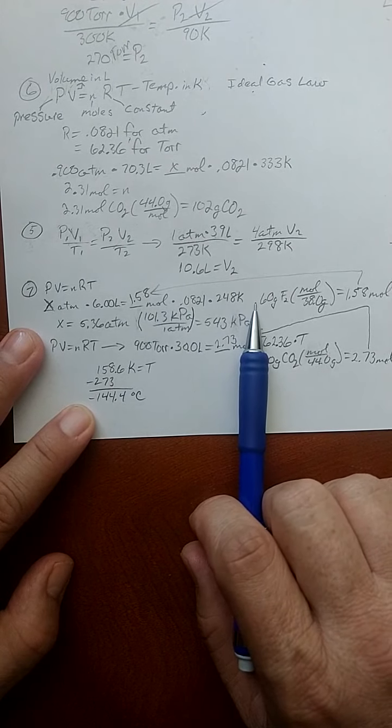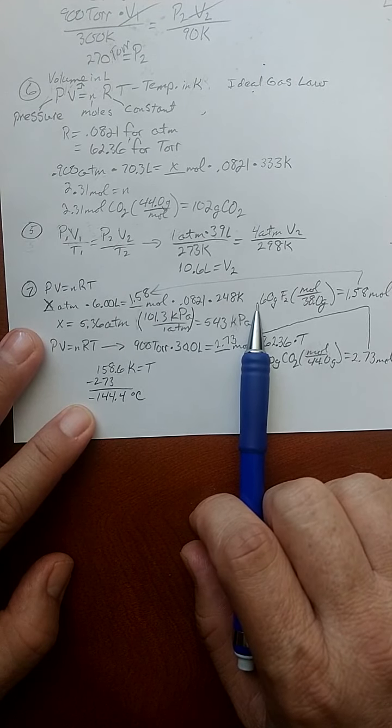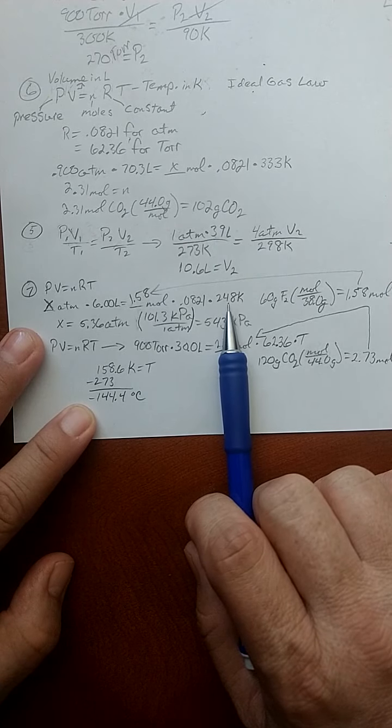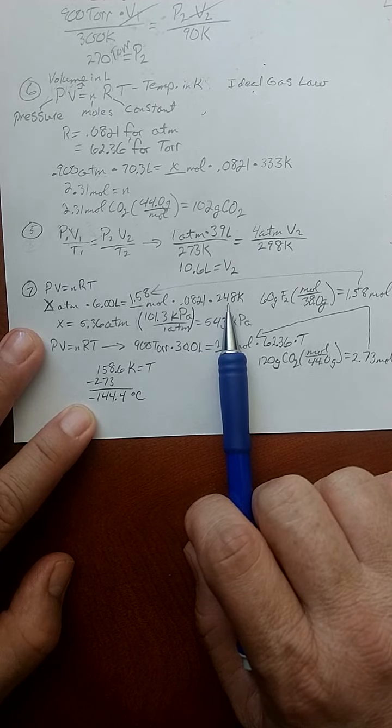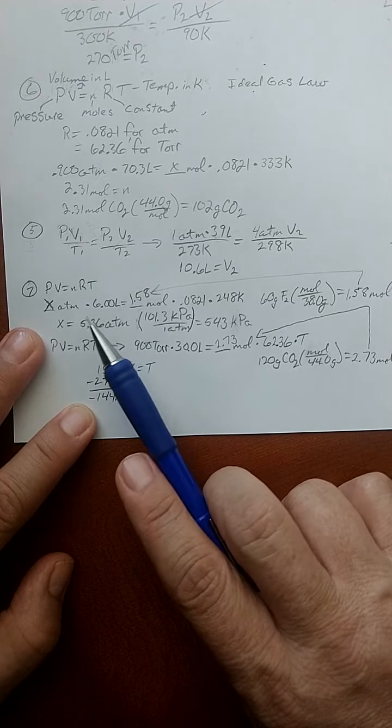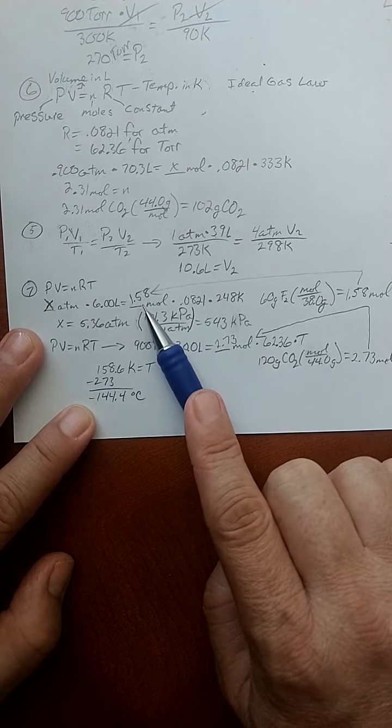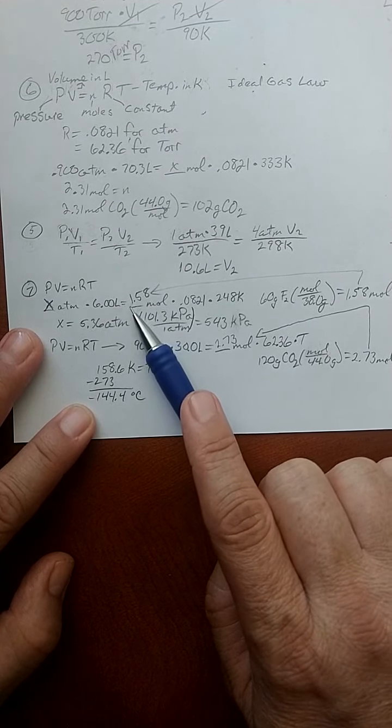I added 273 to my Celsius temperature and I got Kelvin. And what I have here is a hole in my information. I don't have atmospheres because that's the question. And it turns out I don't have moles. So I can't solve this yet.